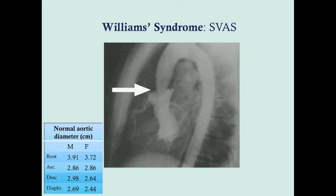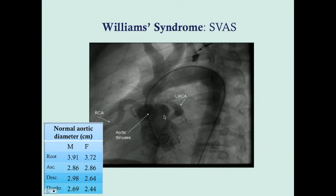Supravalvular aortic stenosis can be visualized on contrast imaging. The normal aortic diameter at the root is about 3.91 cm in males and 3.72 cm in females, with a gradual decrease thereafter. In Williams syndrome patients, you can see a very significant narrowing of the aorta at the level of the stenosis.